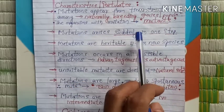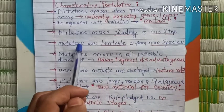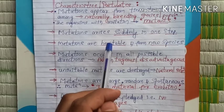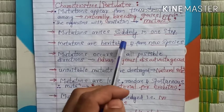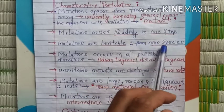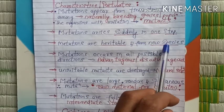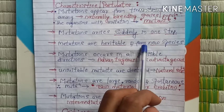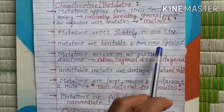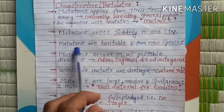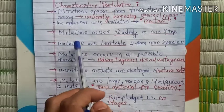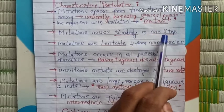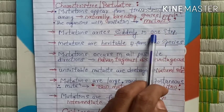The third important point is that mutations are heritable — heritable means they can be transmitted to the next generation — and they help in the formation of new species. According to Darwin, new species are formed by natural selection, whereas according to de Vries, new species formation takes place because of mutations, which are sudden changes occurring in only one step.